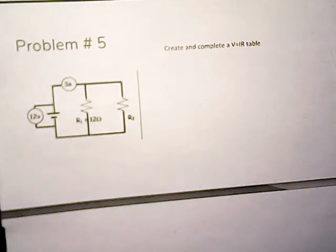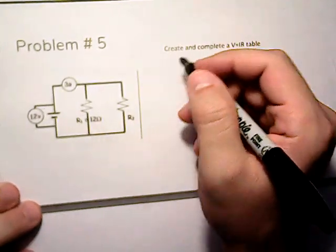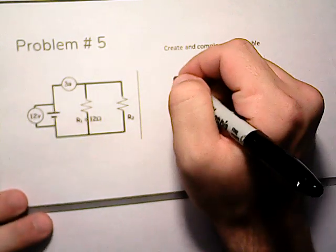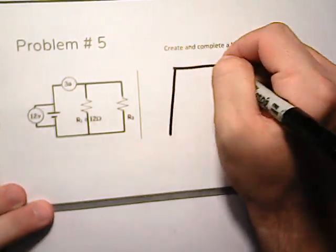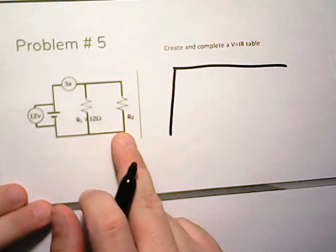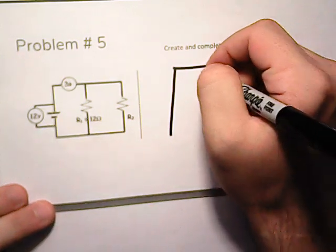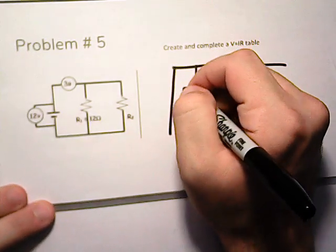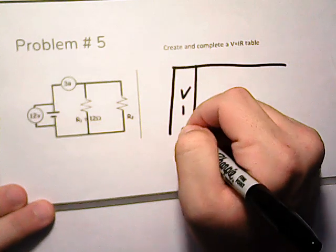All right, so we're going to go ahead and take a look at number five. So number five, we need to create a V equals IR table. So we have two resistors, so we have our column for our total. So V, I, R.